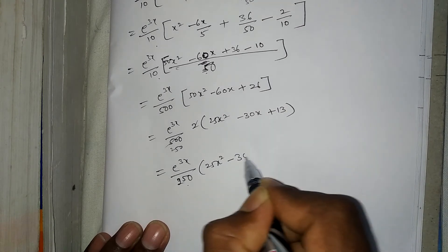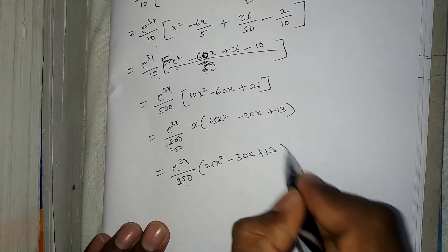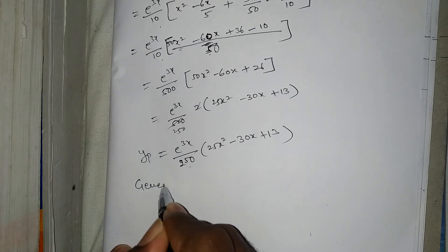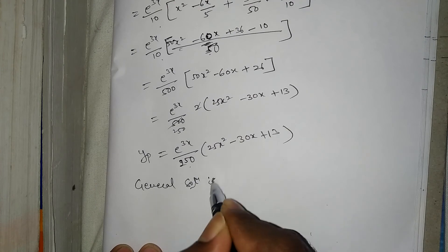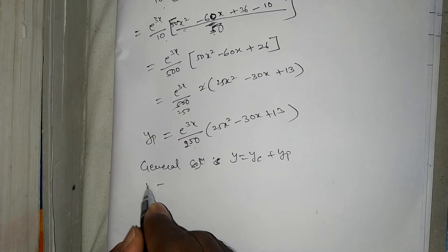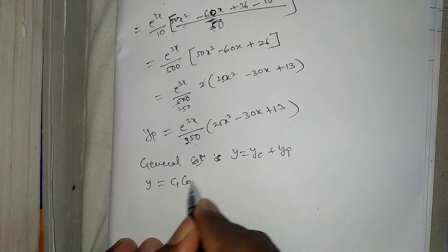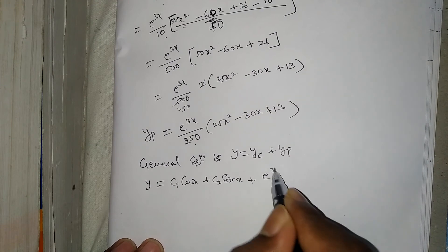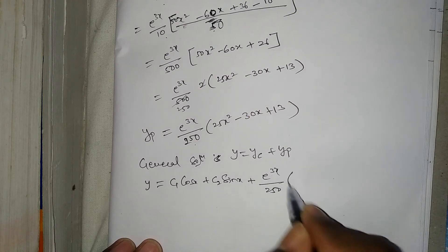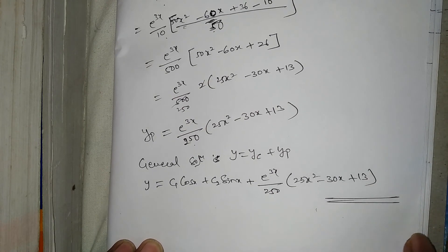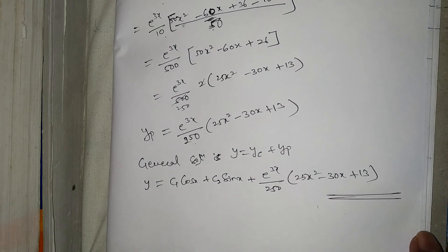The general solution is y = yc + yp, that is y = c₁cos(x) + c₂sin(x) + (e^(3x)/250)(25x² − 30x + 13). If you have any doubt, please comment. Please subscribe to my channel, like and share. Thank you everyone.